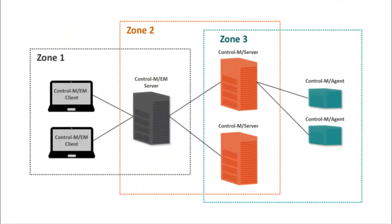SSL configuration in Control-M is divided into zones. Zone 1 is the configuration between Control-M clients and the Control-M web server. Zone 2 is the configuration between the Control-M EM server and Control-M server. And Zone 3 is the configuration between Control-M agents. In this video, we'll focus on Zone 1, the configuration between Control-M clients and the Control-M web server.